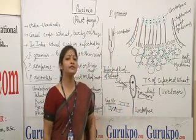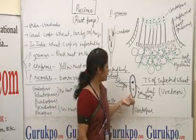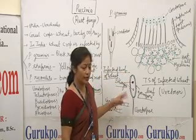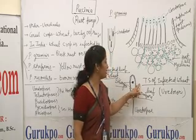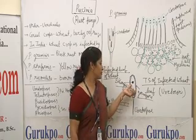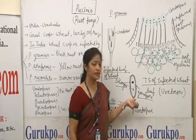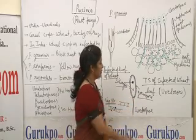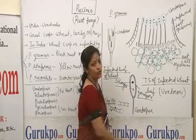If we see the single structure of a uredospore, it shows two coverings: the inner one is called intine and the outermost is called exine. Exine is rough in appearance. We will see two dikaryons in this spore, and a simple stalk. In this uredospore, four germ pores are also present.